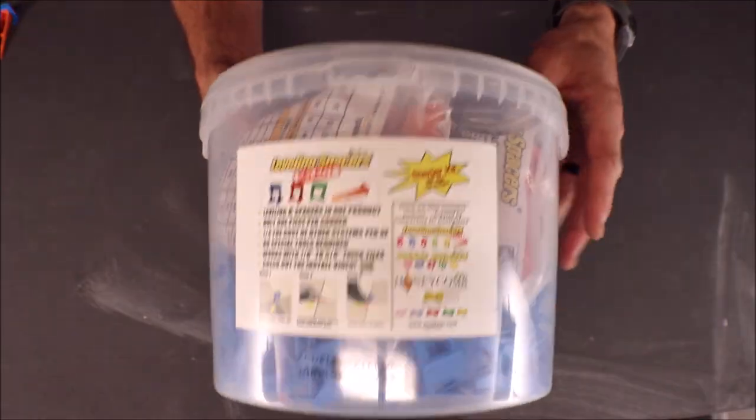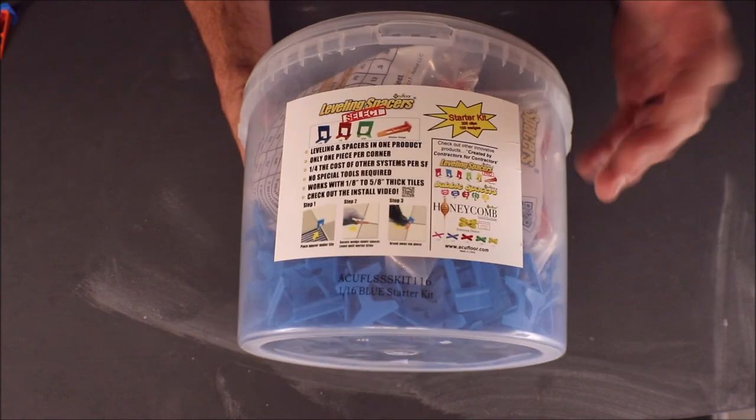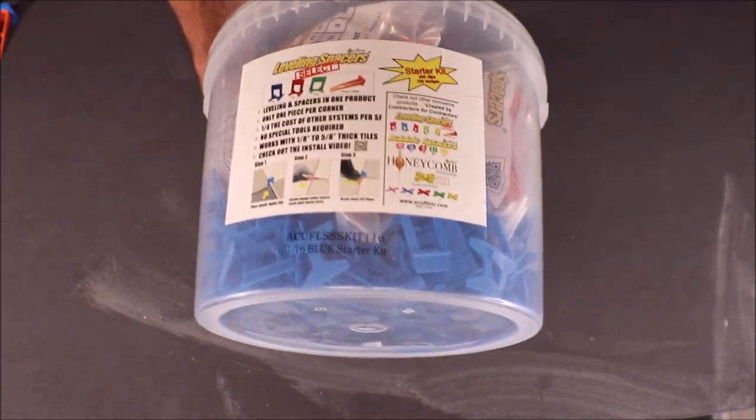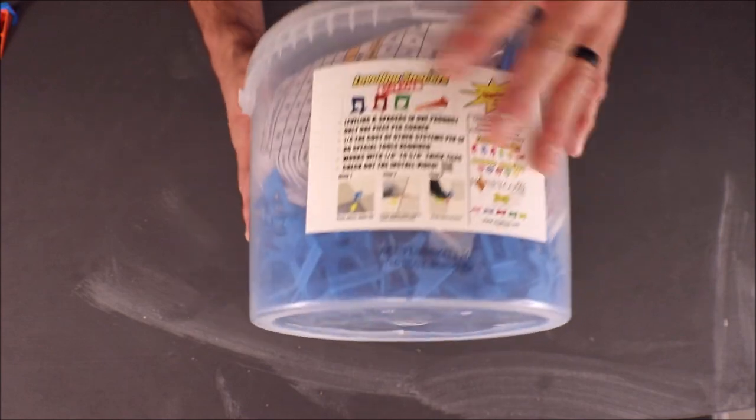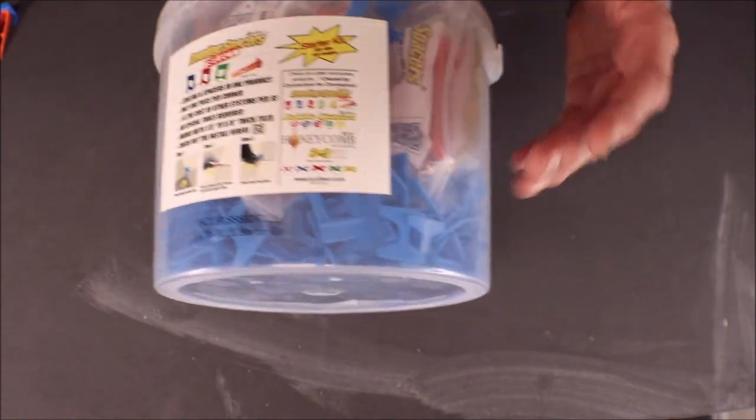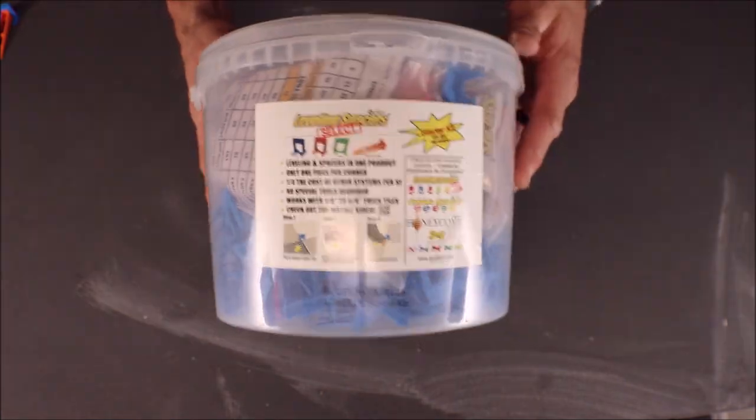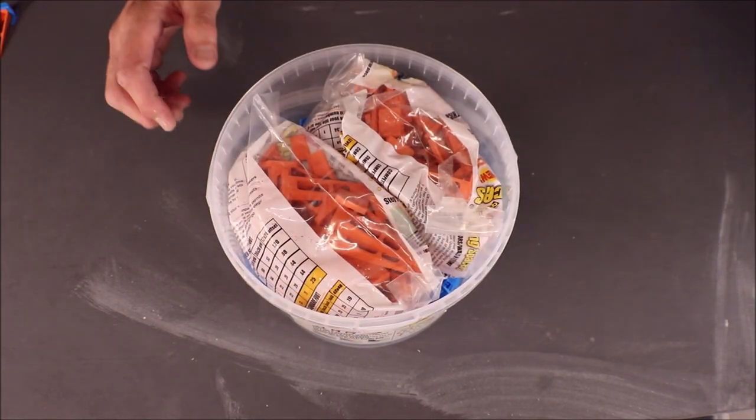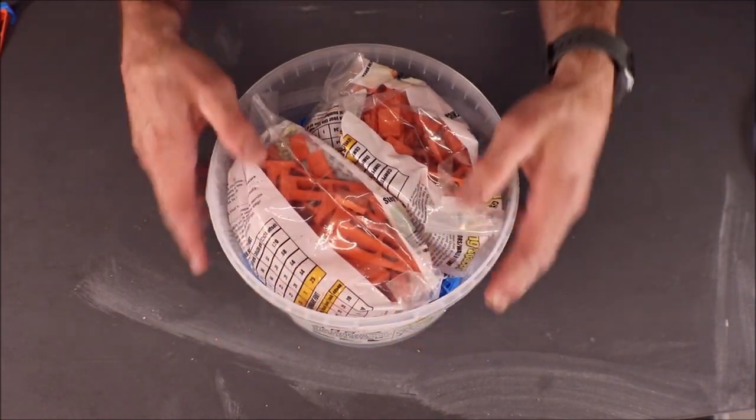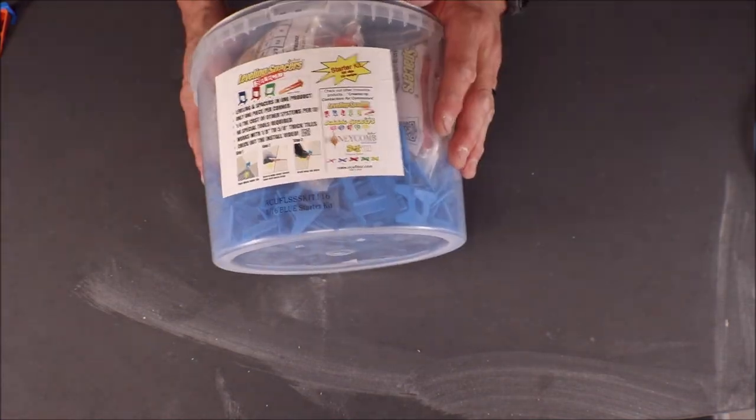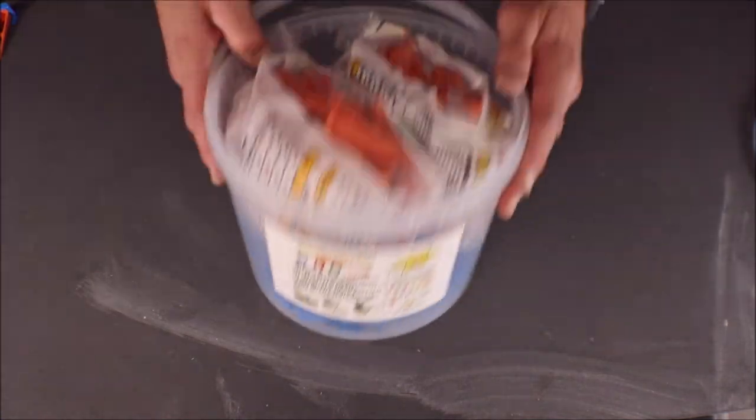Well, here it is. By AccuFloor. They offer a lot of different options for spacers and anti-lippage systems. This kit is a one-sixteenth of an inch, 200 clips, 100 wedges, price point's great. I'll leave the links in the description below with all pricing and specs, and the discount code, I believe, is E-Tile. Type that in, save some money.